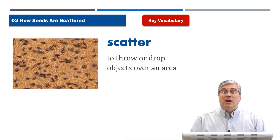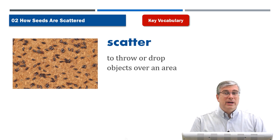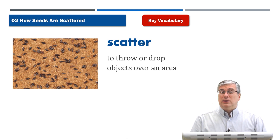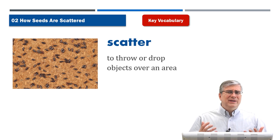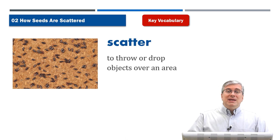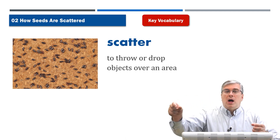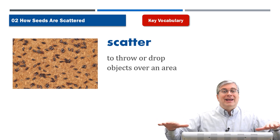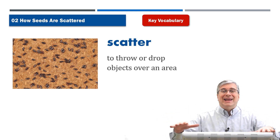As usual we start with the vocabulary. You may have noticed a difficult word in the unit title: how seeds are scattered. What does scatter mean? Scatter means to throw or drop objects over an area, usually a wide area.